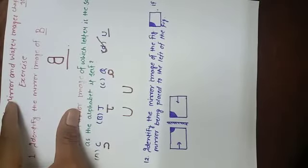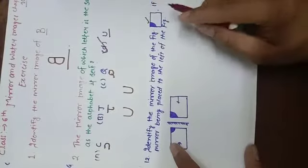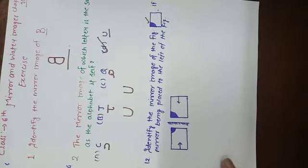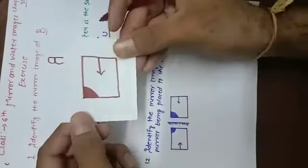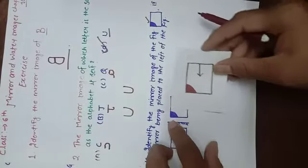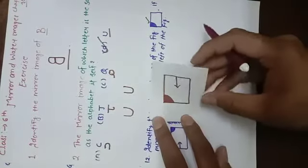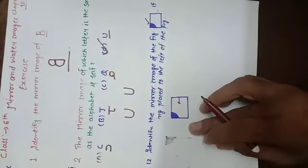The next question asks: identify the mirror image of the given figure, with the mirror placed to the left of the figure. A figure is given, and we have to find out how it will look after taking the mirror image. The concept is the same — you draw the figure, then turn the page, and when you turn the page you get the mirror image of that figure.